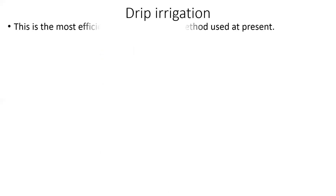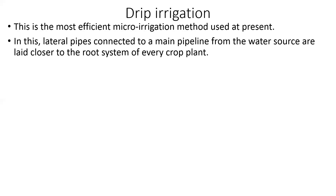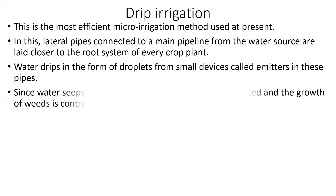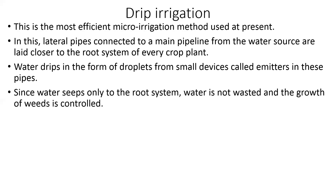Drip irrigation is the most efficient micro-irrigation method used at present. Lateral pipes connected to a main pipeline from the water source are laid closer to the root system of every crop plant. Water drips in the form of droplets from small devices called emitters. Since water seeps only to the root system, water is not wasted and the growth of weeds is controlled.